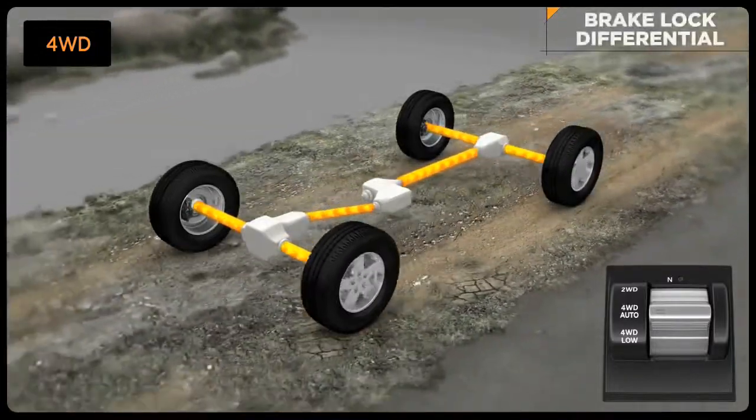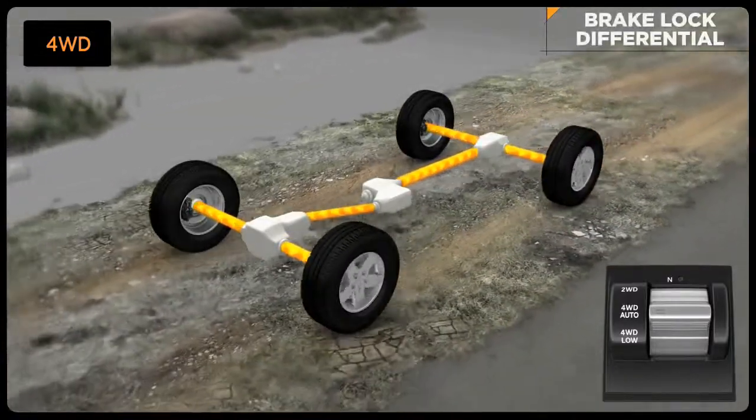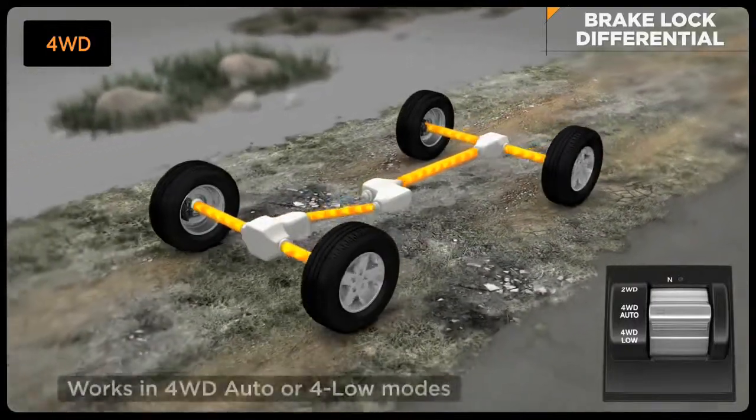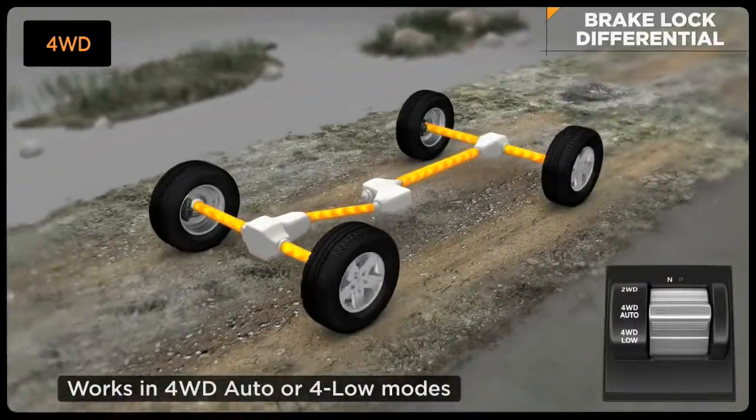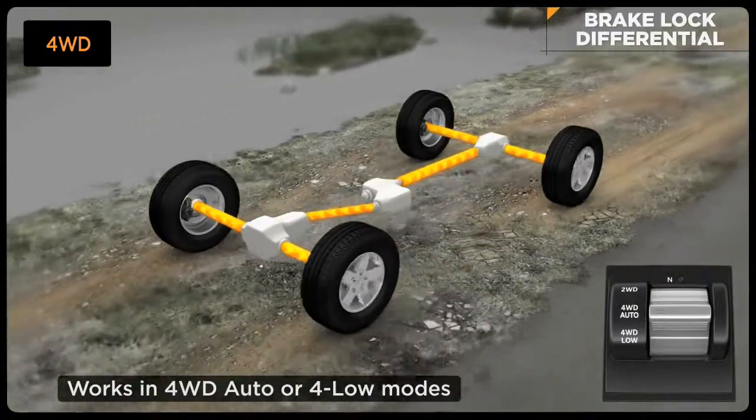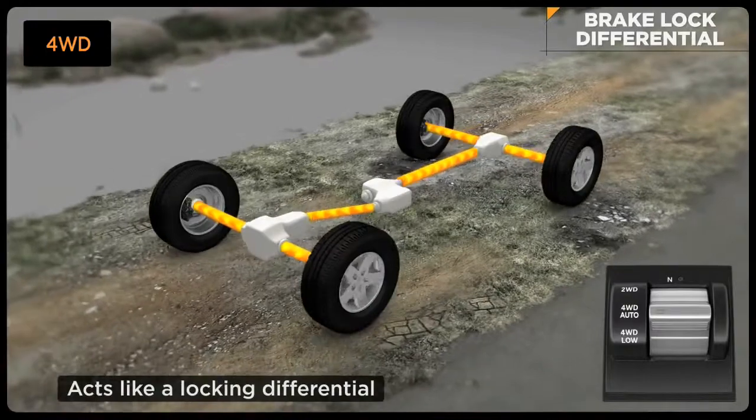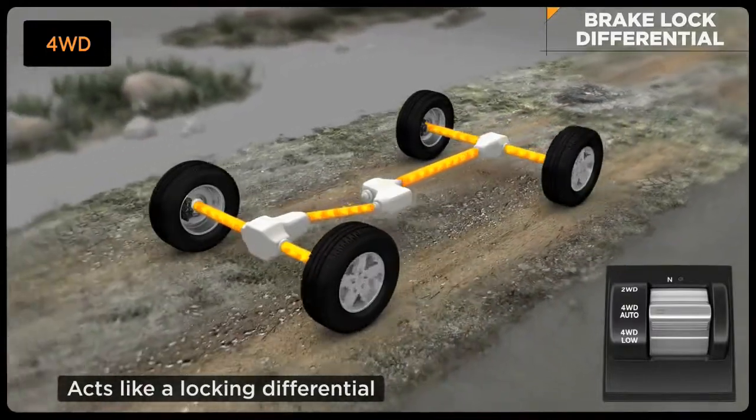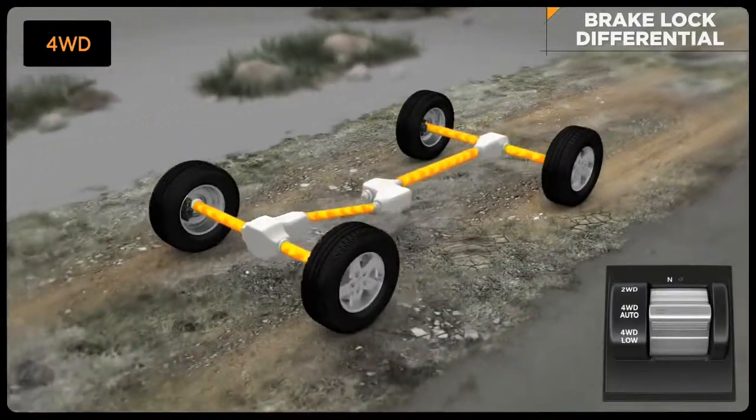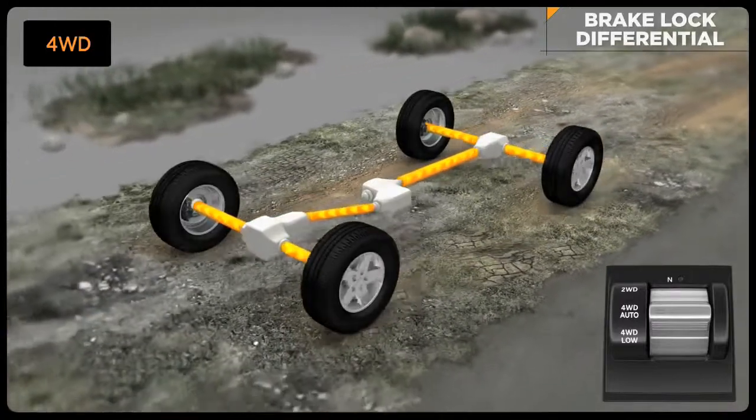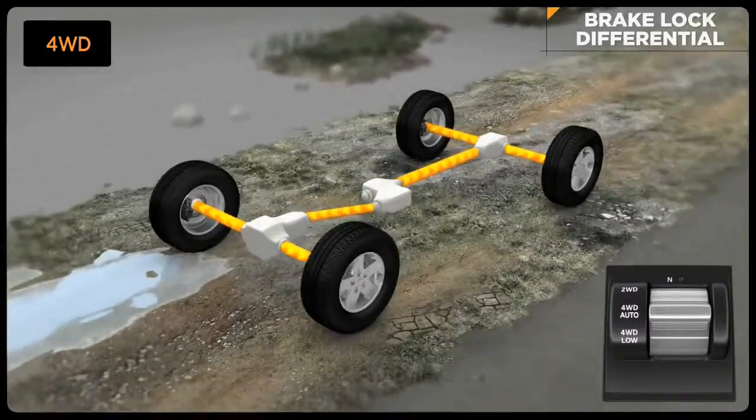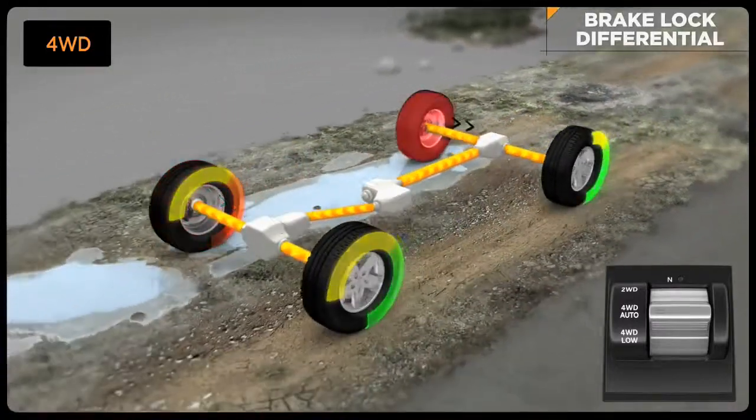Brake lock differential, or BLD, is a special feature of traction control. It's active in four-wheel drive auto and low range for greater traction when rock crawling or through severe off-road terrain. This improved traction capability offers similar performance to a locking differential. The goal of the system is to ensure that both wheels on an axle are turning at the same rate of speed.